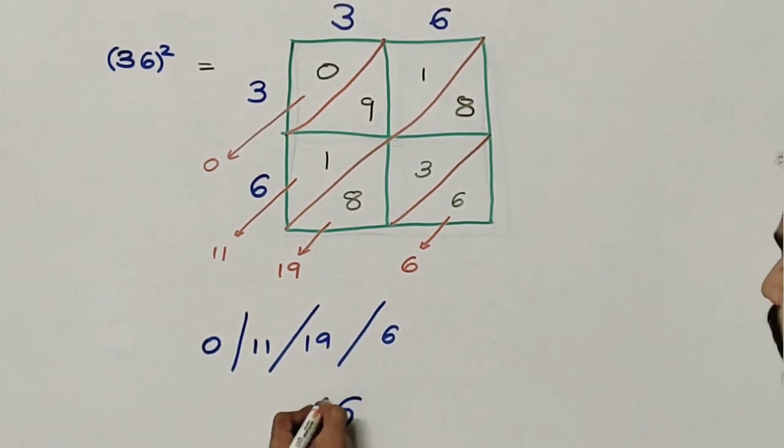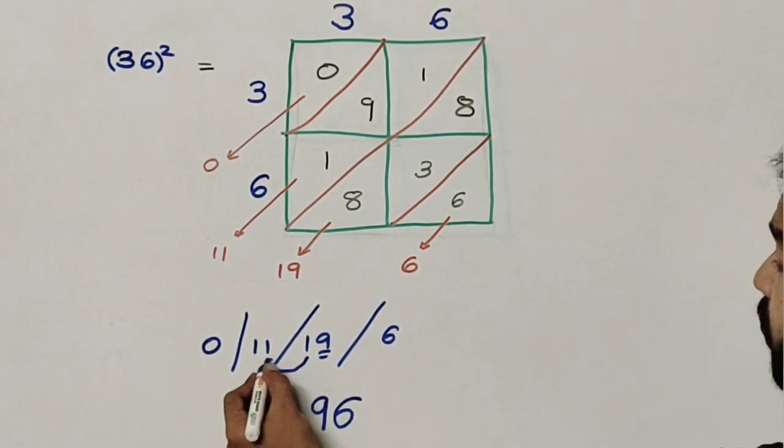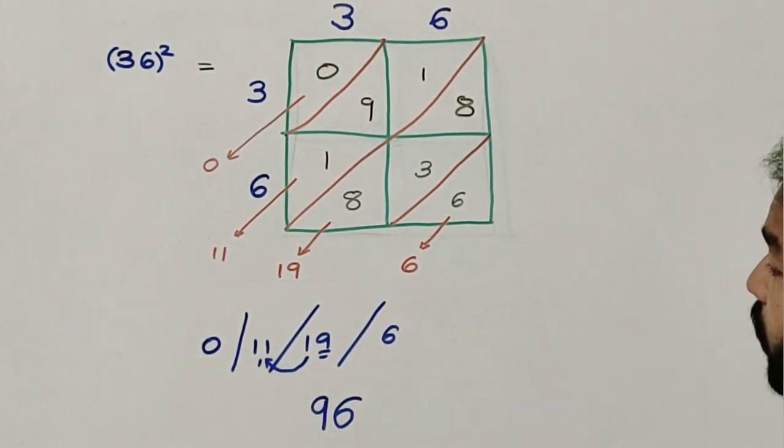From second I will write the unit place number which is 9. And I will carry 1 forward. So 11 plus 1 then becomes 12.